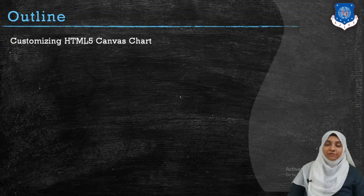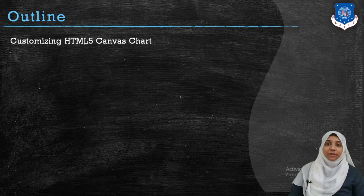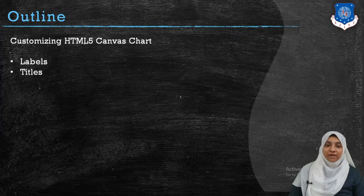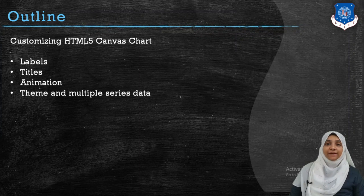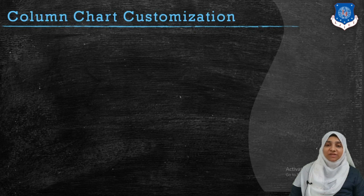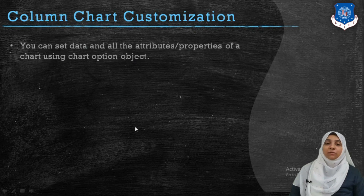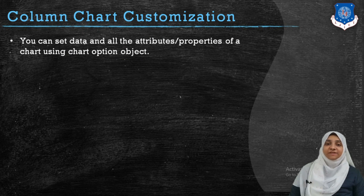In our previous video we saw how to draw a chart using the CanvasJS library. In this video we are going to study how to customize the chart using CanvasJS. We will see customization of labels, titles, how to animate, how to apply a theme, and how to render multiple series data. Let us start with column chart customization. Customizing is nothing but setting the properties or attribute values of the chart object.